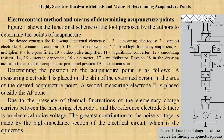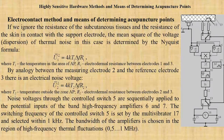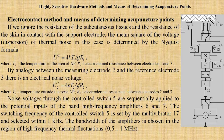Determining the position of the acupuncture points is as follows. A measuring electrode 1 is placed on the skin of the examined person in the area of the desired acupuncture points. A second measuring electrode 2 is placed outside the acupuncture point zone. If we ignore the resistance of the subcutaneous tissue and the resistance of the skin in contact with the support electrode,